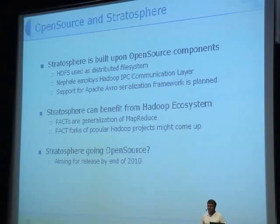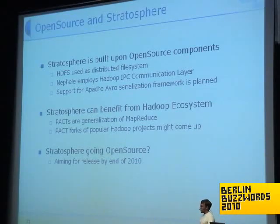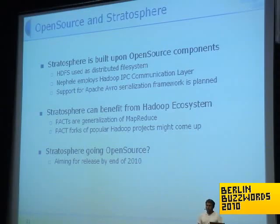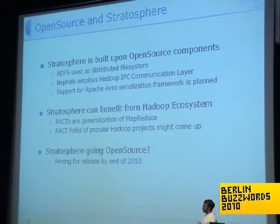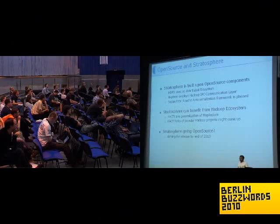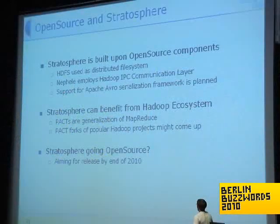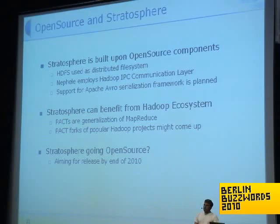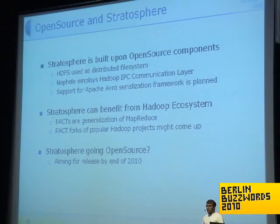How does open source relate to us? The Stratosphere system is built on a couple of open source components. We're using the Hadoop file system, and for the Nephele system we also use a communication layer. We plan to support the Apache Avro project, which does serialization, so we want to include that to work with data coming from that ecosystem. How can Stratosphere benefit from the ecosystem? As said, PACTs are a generalization of MapReduce, so doing a fork of those higher-level languages should be doable. And finally, Stratosphere going open source — we were trying to do that; we plan to do it by end of this year, though we'll see whether we can hold to that.